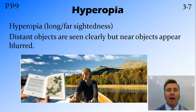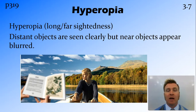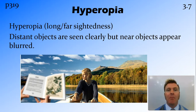Hyperopia is long-sightedness, with 'hyper' meaning large — long-sightedness. It's important to note that long-sightedness and short-sightedness are defined by what you can see rather than what you can't see. So someone with long-sightedness can see distant objects, but has trouble focusing on objects that are close to them.